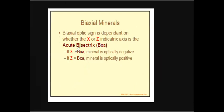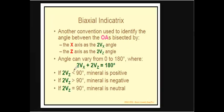To summarize: biaxial optic sign depends on whether x or z is the acute bisectrix. If BxA is x, it is optically negative; if BxA is z, it is optically positive. Note that 2Vx + 2Vz = 180°. If 2Vz is less than 90°, the mineral is positive; if 2Vz is greater than 90°, it is negative; if 2Vz equals 90°, it is neutral.